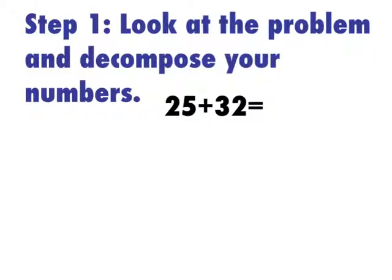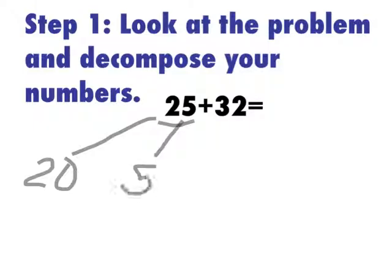So I'm going to start with 25. So in the number 25, I know that I have two tens, which is equivalent to 20. I have five ones, which are equivalent to 5. And then in 32, I have three tens, which is equivalent to 30. And I have two ones that are equivalent to 2.